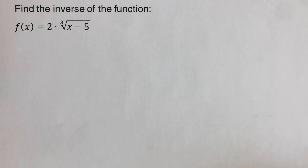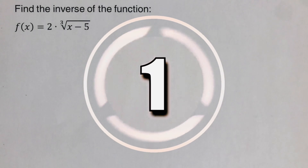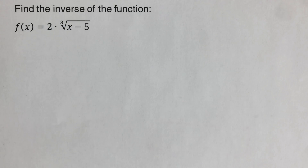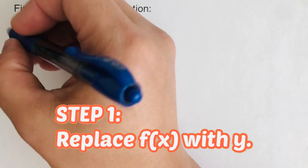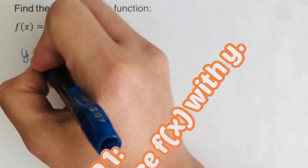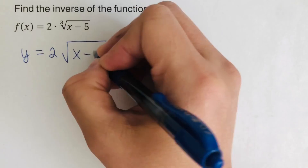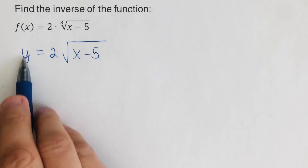Okay, let's go over the second problem. There are steps we need to follow to determine the inverse of any function. The first step is to replace f(x) with y, so that comes out as: y is equal to 2 times the cube root of x minus 5.